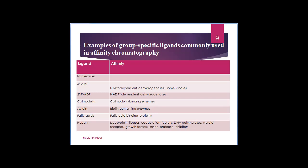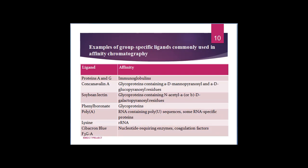Similarly, protein A and protein G, which have high affinity for immunoglobulins, can be used for separation of Ig molecules. Concanavalin A can be used for separation of glycoproteins containing alpha-D-mannopyranosyl and alpha-D-glucopyranosyl residues. Soybean lectin can be used for separation of glycoproteins containing N-acetyl alpha- or beta-D-galactopyranosyl residues. Poly-U can be used for separation of RNA containing poly-U sequences and some RNA-specific proteins. Lysine, which has high affinity for rRNA, can be used for separation of rRNA molecules.